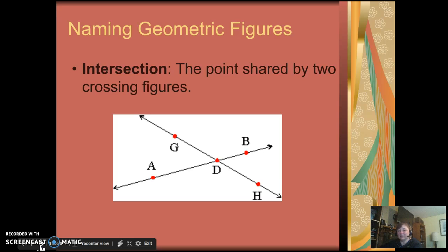An intersection is a point shared by two crossing figures. In this example, our figures are lines. Two lines intersect at a point.